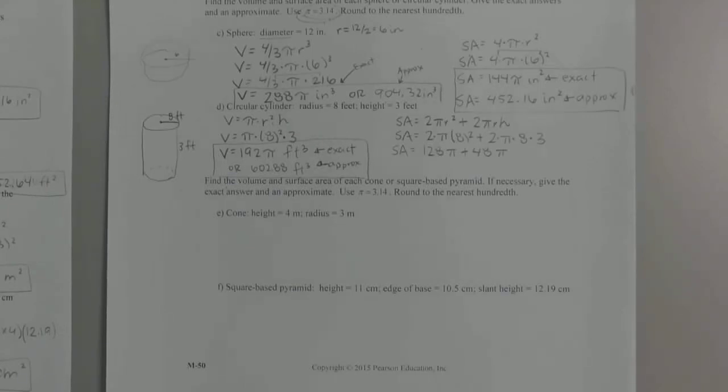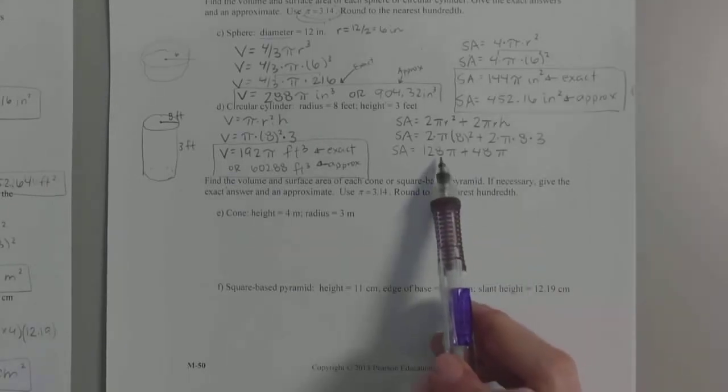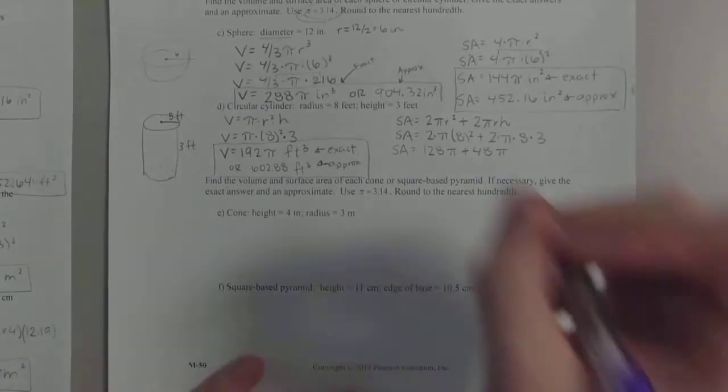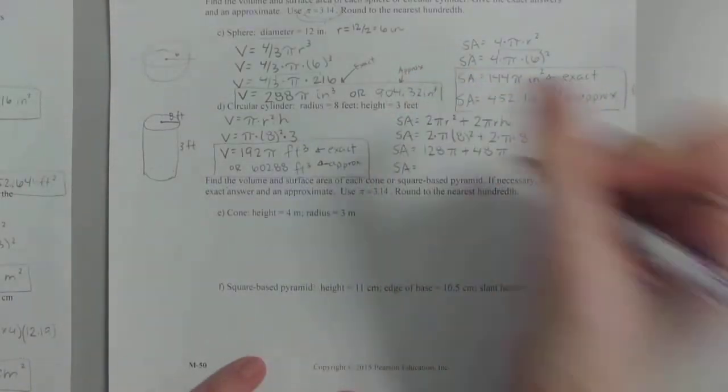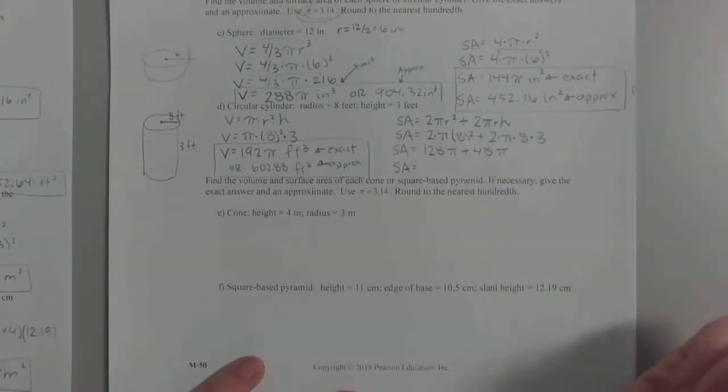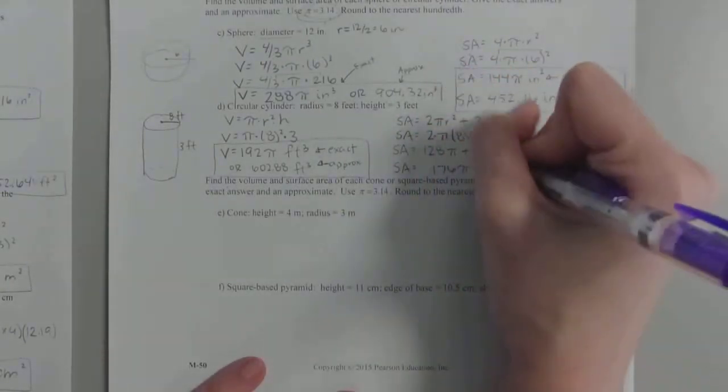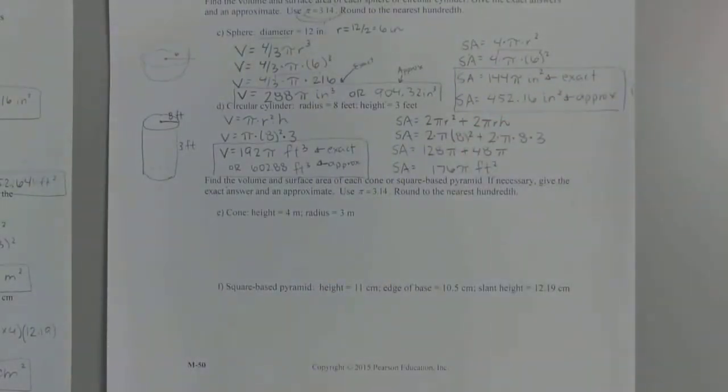Remember when we were introduced to 3.1 with equations, and they're called like terms? These are like terms. Here's a pi and here's a pi. So guess what we can do? We can add the 128 with the 48. So our exact answer is actually going to be the sum. So what's 128 plus 48? 176 pi. That's the exact. That will be the exact.